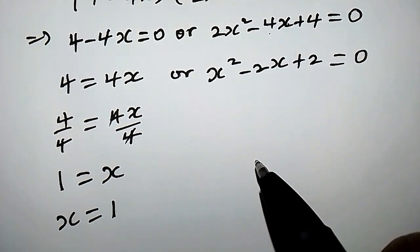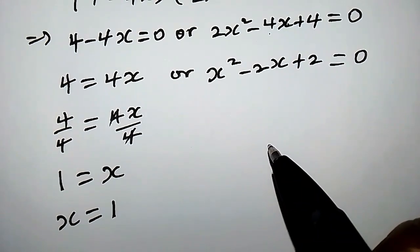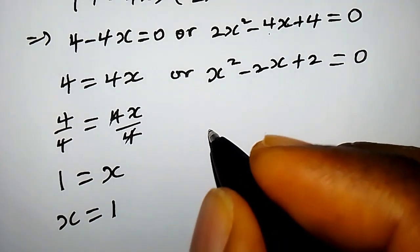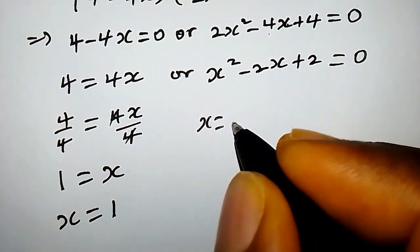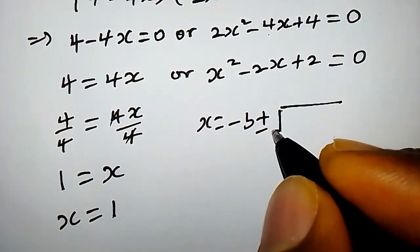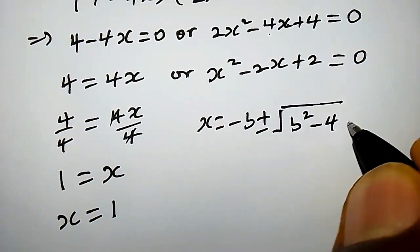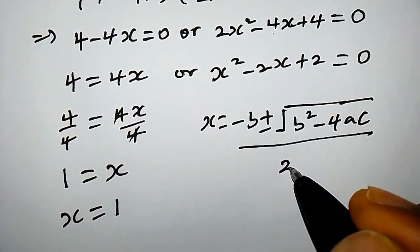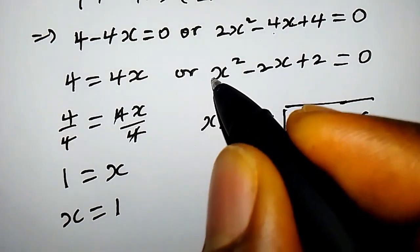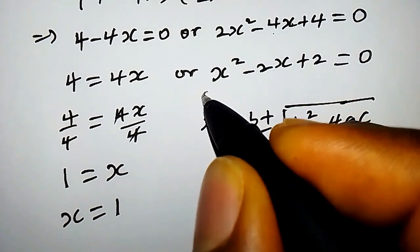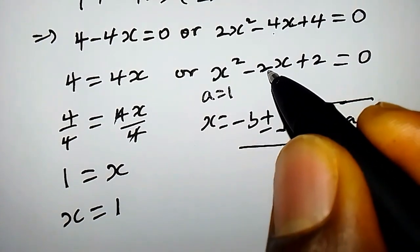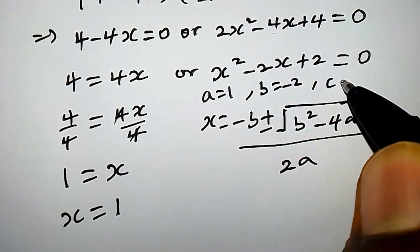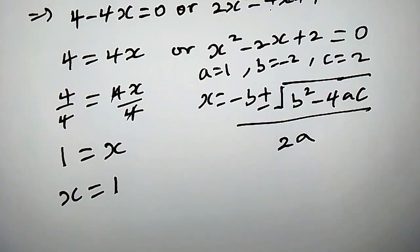Now let us consider this quadratic equation — you will observe that it is not factorable over the real numbers, so we're going to use the quadratic formula to solve it. Recall that x equals negative b plus or minus the square root of b squared minus 4ac, all over 2a. In this case, the coefficient of x squared is 1, so a equals 1, the coefficient of x is negative 2, so b equals negative 2, and c equals 2.